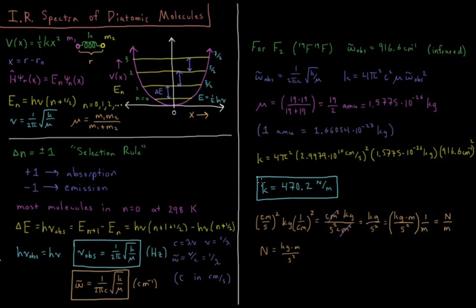This gives us that K equals 470.2 newtons per meter. So every meter that our atoms displace away from their equilibrium bond length, they would feel 470 newtons of force pushing them back towards equilibrium.